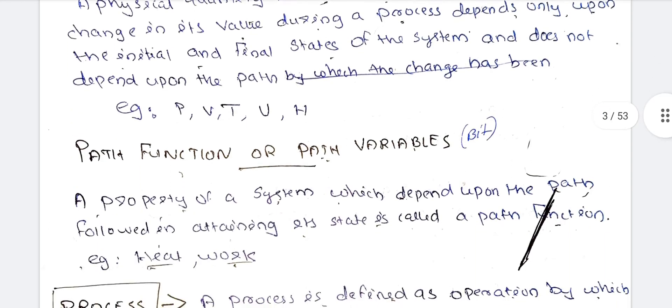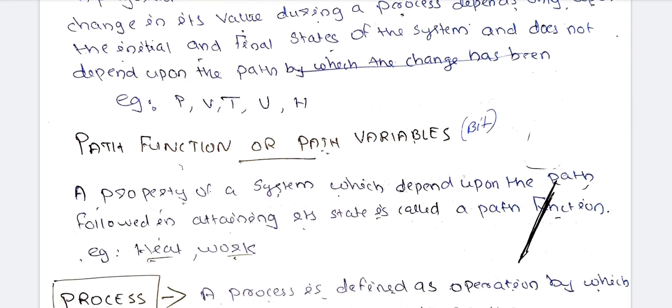A path function is a property of a system which depends upon the path followed in attaining its state — this is called a path function. An example of a path function is heat.